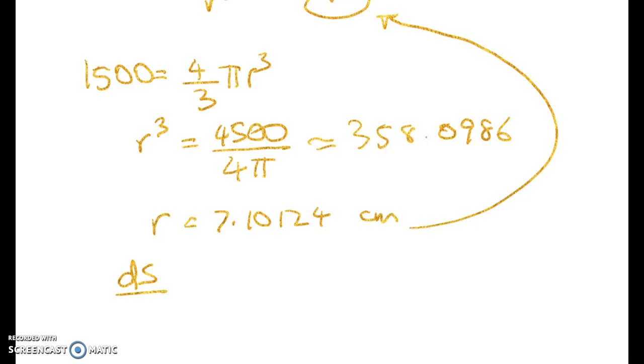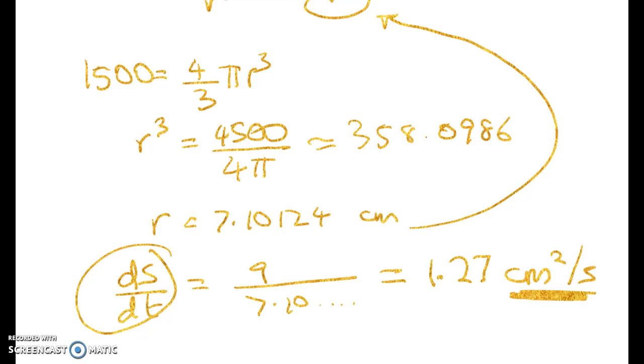We get dS by dt is equal to 9 divided by that number. Which is, now we can round 1.27 squared centimeters per second. Just make sure that you've understood that the unit here will match the denominator and the numerator of the rate of change that I'm looking for.